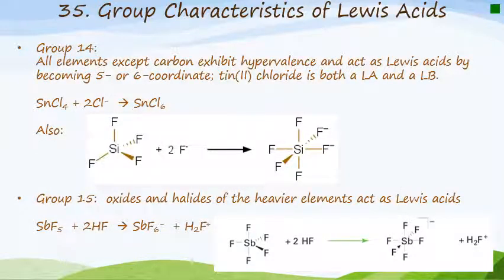Group 14, which contains and starts with carbon. All of the elements in group 14, except for carbon, will exhibit hypervalence, which means they have the ability to expand the octet. They will act as Lewis acids by becoming five or six coordinate structures. And for example, tin chloride can both act as a Lewis acid and a Lewis base. In this case, in this example here with the silicon tetrafluoride, this is the Lewis acid. This is the Lewis base. And you end up with the adduct over here, where the octet of the silicon has been expanded.